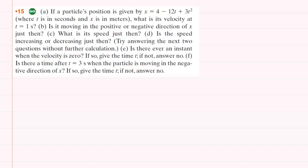In part A, we are asked to determine this particle's velocity at t equals 1 second. We are not given a velocity function. We are given a position function, so we're going to have to transform the position function into the velocity function. We can do that by recalling that velocity is equal to the derivative of the position with respect to time, so we have to compute the derivative of this function to change it into a velocity function.